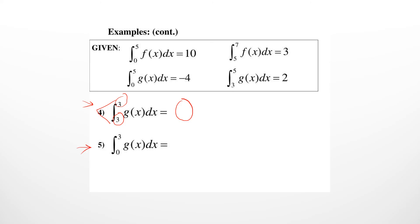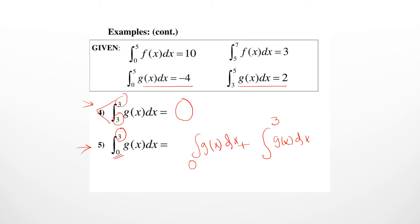Question number 5: from 0 to 3, g(x) dx. You have data for g(x) dx, but you don't have a direct 0 to 3 result. So divide into two parts: write the lower limit 0 on the first integral and the upper limit 3 on the second, with g(x) dx in both. The shared middle value should be 5, since both given data points involve 5. So write 5 as the upper limit of the first and lower limit of the second. From 0 to 5, g(x) dx equals -4.